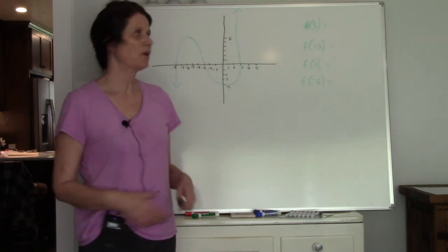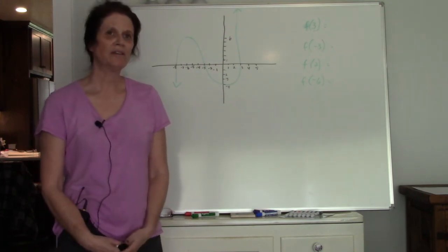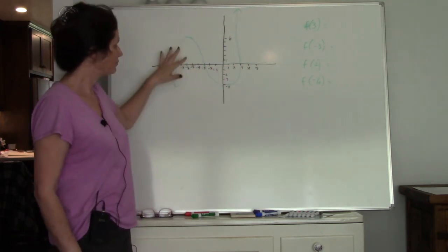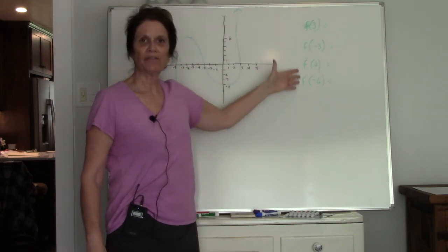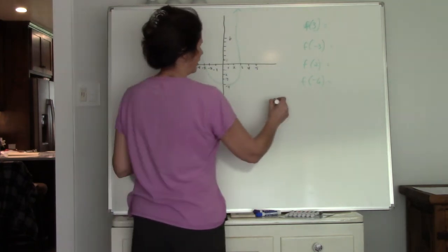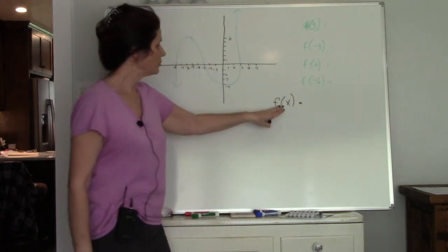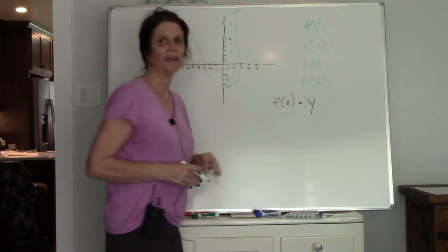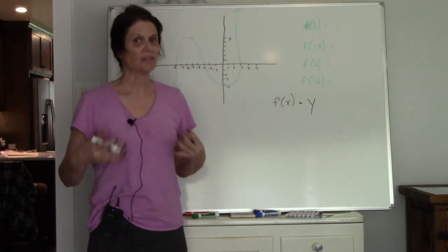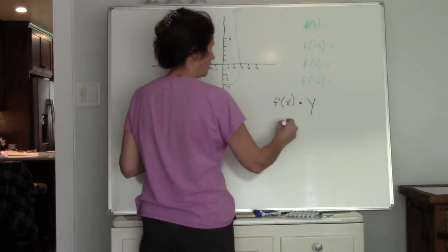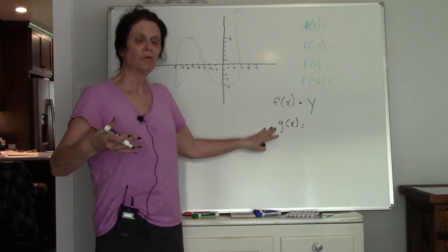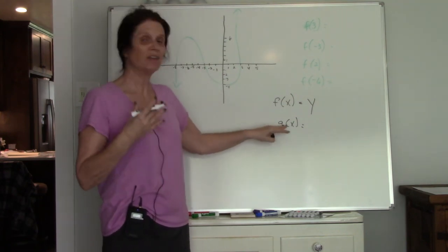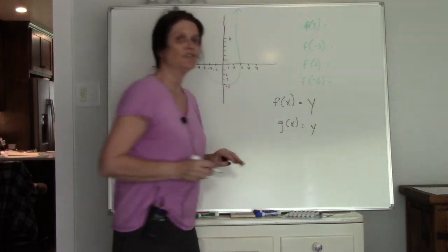We're going to start with being able to read a graph. With functional notation, all that means is we're identifying the function. Whenever you have the notation f of x, this just means we have a function — we're calling it the f function. This is exactly the same thing as y. There's really no difference; it just now has a name. If we wrote it as g of x, we have a new function called g, to distinguish it from f. It still means y, so don't let that throw you.